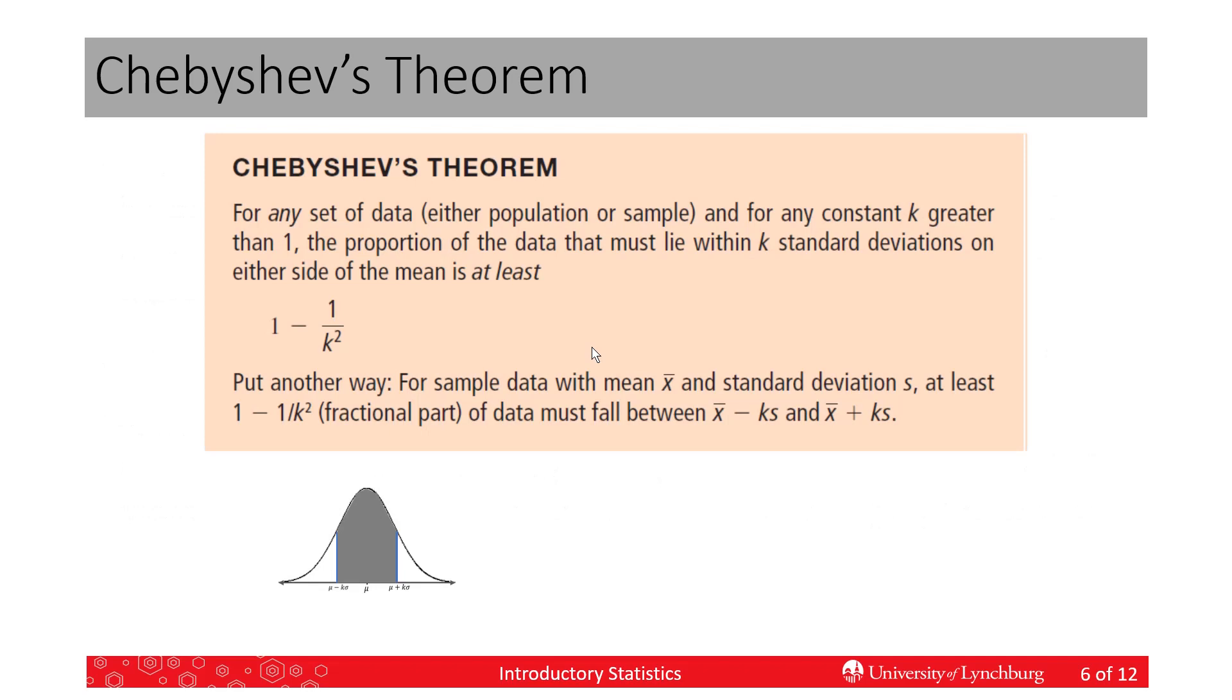Now, it has to be greater than one standard deviation that we're talking about. So this says for any population, any distribution, or either a population or a sample, as long as we have a constant that's greater than one, it can be 1.1, but it has to be greater than one, then the proportion of data or a proportion of the population that has to be within k standard deviations on either side of the mean is at least, or this is the minimum, that's what it's saying, is 1 minus 1 over k squared.